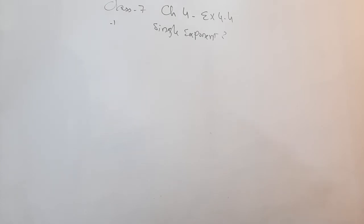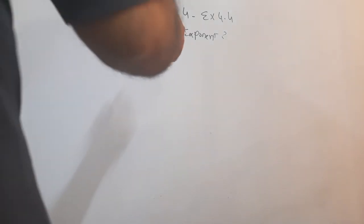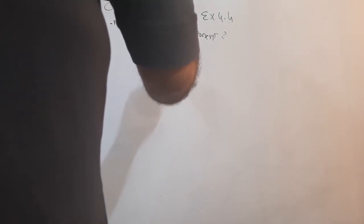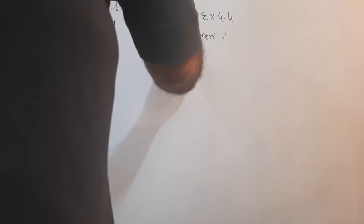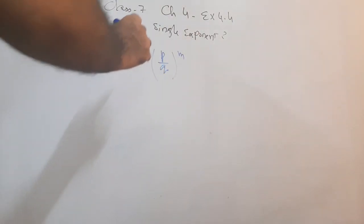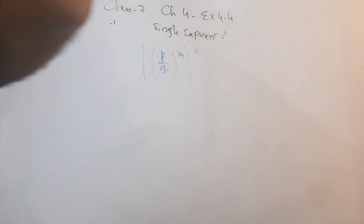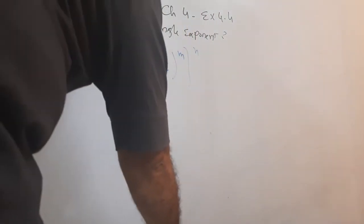The next part is p over q, raised to power m, and this is raised to power n. There are two steps.